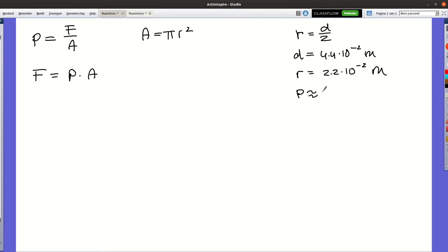So the air pressure is about 1 bar, which comes down to 10 to the power of 5 pascals. Let's first calculate the area. A equals pi times 2.2 times 10 to the power of minus 2 squared. So A equals 1.5 times 10 to the power of minus 3 square meters.